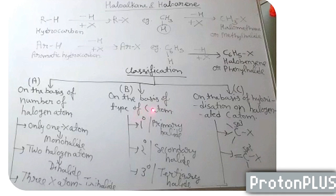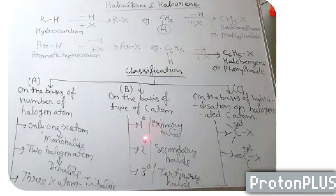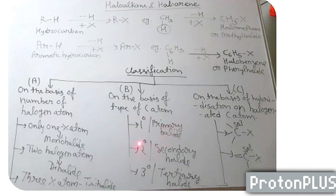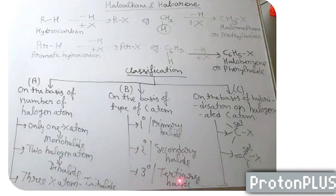As we know, types of carbon atom are 1 degree, 2 degree, 3 degree, and 4 degree. So, the halogen atom present on a carbon atom — if that carbon atom is primary, then it is a primary halide. If the halogenated carbon atom is 2 degree, it is a secondary halide. If it is 3 degree, then it is a tertiary halide.